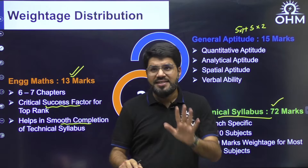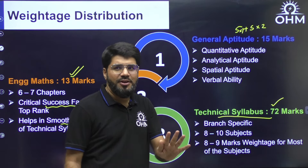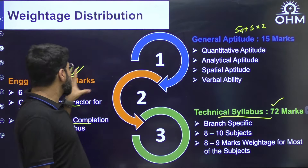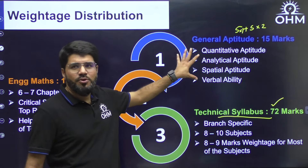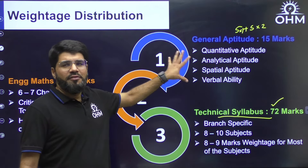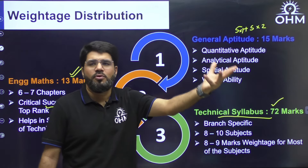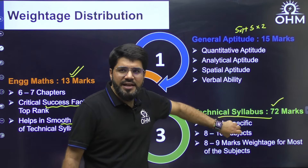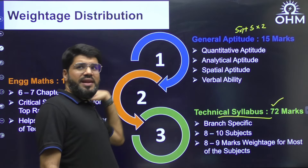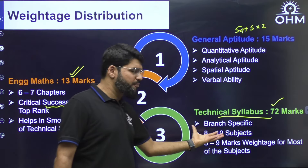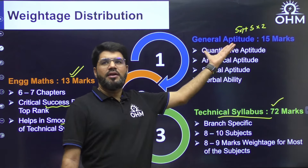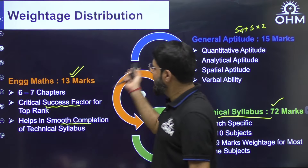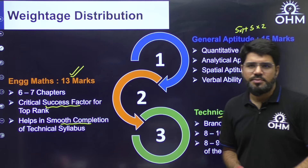However, to be a top ranker, you also have to be technically strong. The technical syllabus covers 72 marks and is branch-specific. These 28 marks from aptitude and maths are rank boosters, but the real rank is decided by technical performance. You can extract bread-and-butter marks from aptitude and maths, but technical is your base.